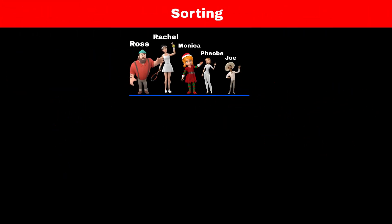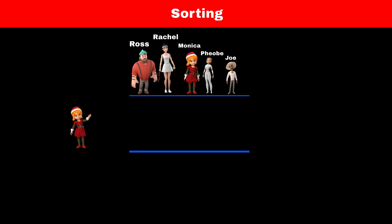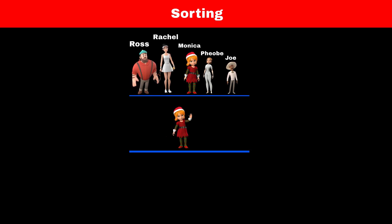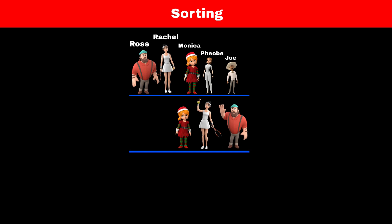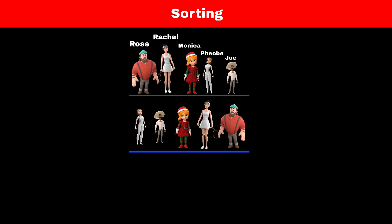Now there are five students in a line: Ross, Rachel, Monica, Phoebe, and Joey. The students selected one person — consider Monica. All the students who are taller than Monica will stand behind her. For example, Ross and Rachel are taller than Monica, so they will stand behind her, and the rest will stand in front of Monica. Now Monica is in her sorted position.